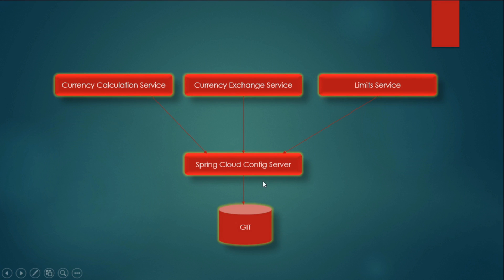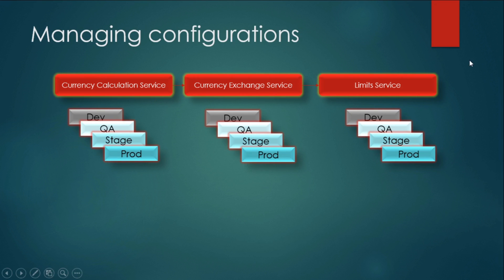Till now we have configured our Spring Cloud Config Server to take the values from the Git repository and display it on the browser. As discussed earlier, all these applications will have different environments. The limit service will have different environments: dev, QA, and prod. For each of these environments we will have a different set of values. Let's go and configure all these different sets of values in our Git repository.